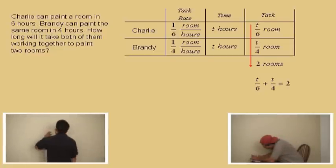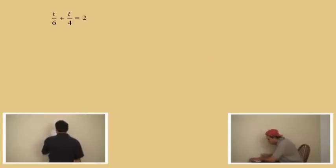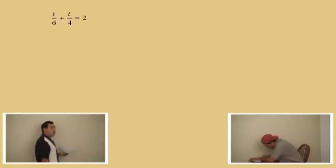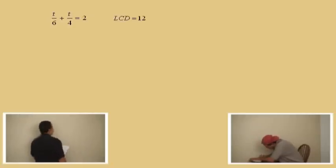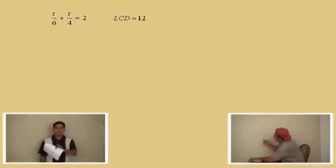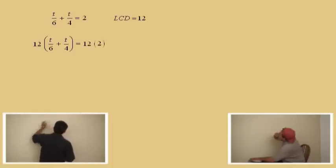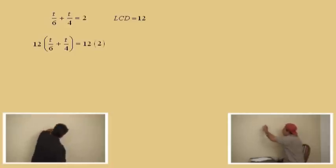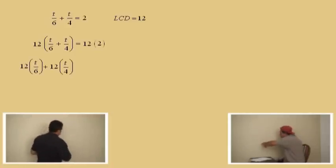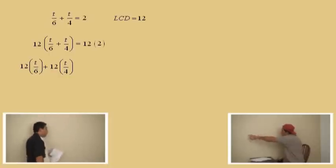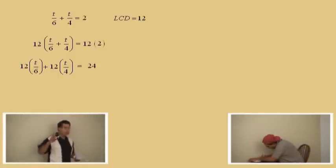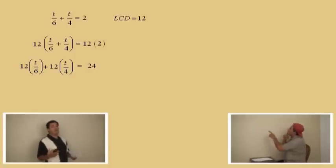Let's go over to another page and solve this equation. T over six plus T over four equals two. We're solving for T, where T represents the amount of time they work together. What's our lowest common denominator between six and four? Twelve. So we're going to multiply both sides of our equation by twelve to clear these fractions out. Multiply left side by twelve, right side by twelve. Now we have to distribute — twelve gets distributed to each term. We have twelve times T over six, plus twelve times T over four, and the right-hand side is twelve times two, which is 24.